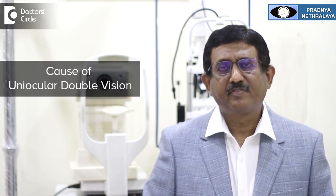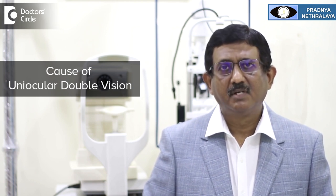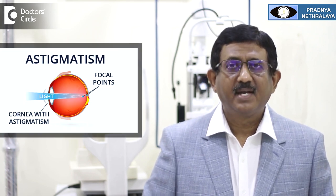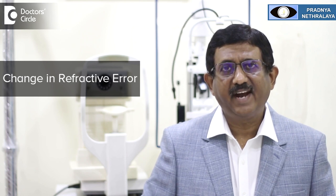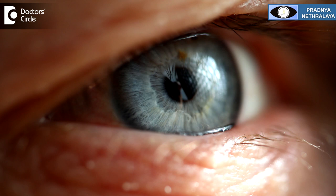The causes of uniocular double vision: the most common cause is high refractive errors, especially astigmatism, which can cause uniocular double vision. Other causes may be a change in refractive error, a change in the shape of the eye — such as when a patient develops keratoconus — or very commonly it is encountered in patients having cataract, who may complain of not only double but even multiple images.